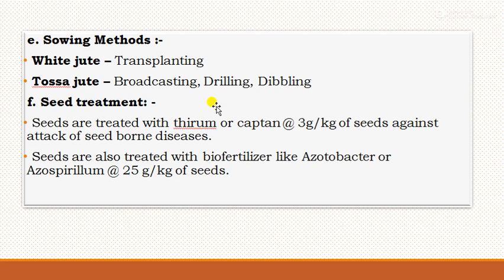For seed treatment, jute seeds are treated with thiram or captan at the rate of 3 grams per kg of seeds against seed-borne diseases. Seeds are also treated with biofertilizers like Azotobacter or Azospirillum at the rate of 25 grams per kg of seeds.